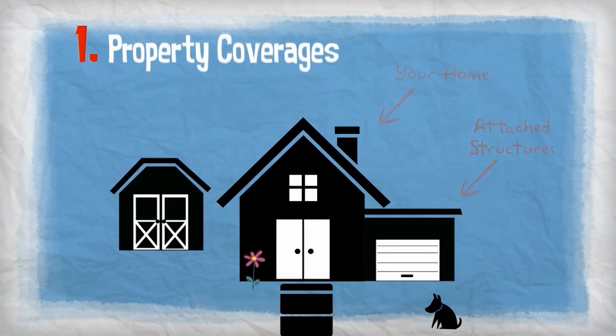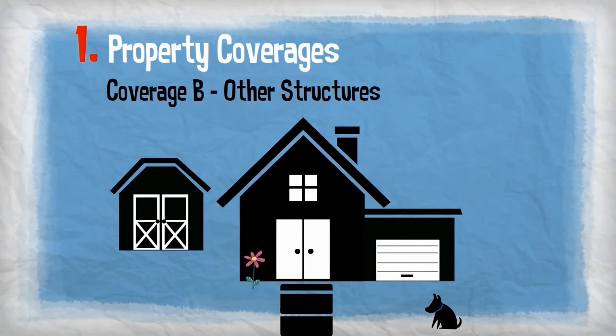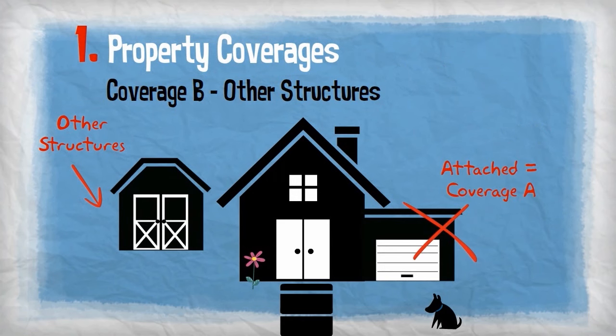Coverage B, other structures, covers the structures other than your home located on your property, such as a detached garage or shed.